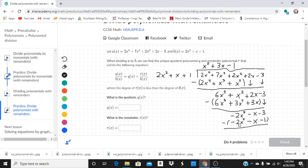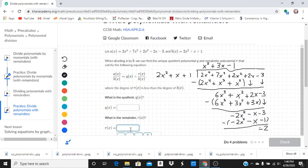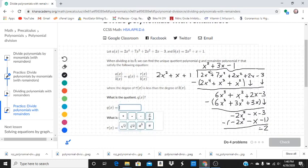Negative 2x squared minus a negative 2x squared is 0. Negative x minus a negative x is 0. And then negative 3 minus negative 1 is negative 2. Negative 2 is our remainder because now 2x squared cannot go into negative 2. And our quotient is up top here, that's x squared plus 3x minus 1.